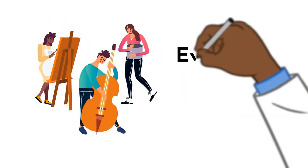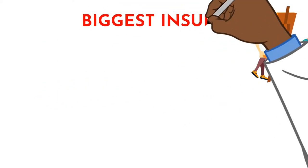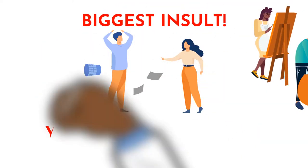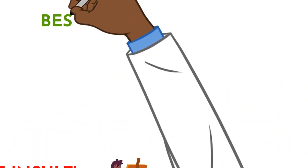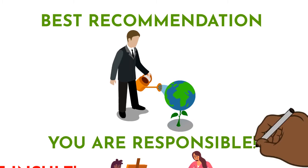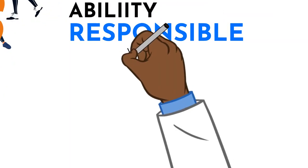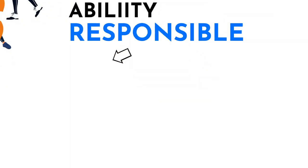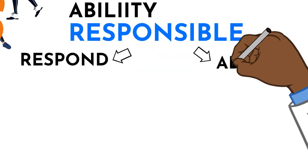Everybody has an ability. One of the biggest insults anybody can give you is to say you are irresponsible. One of the best recommendations anybody can give is that you are responsible. The word responsible comes from two words: respond and ability.